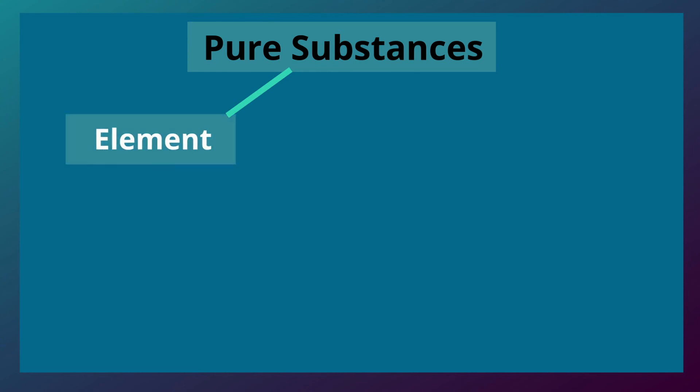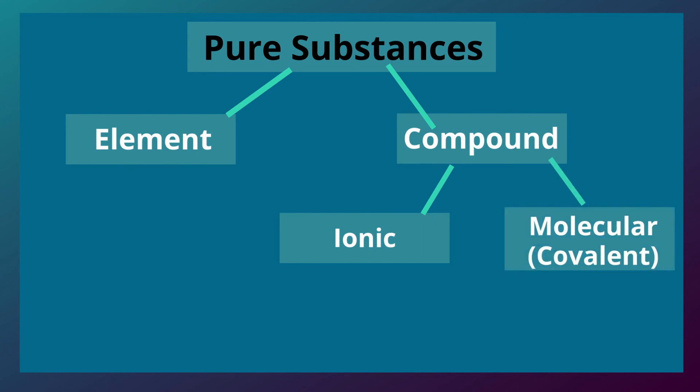Again, a pure substance is an element or a compound, and compounds can be ionic or molecular.